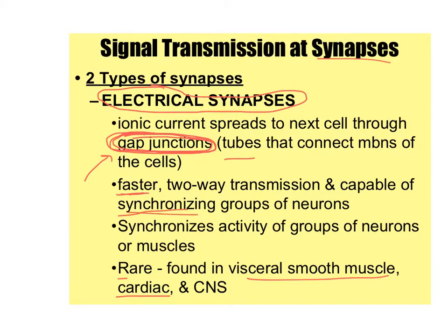It's very important that heart muscle contracts all at once, so you don't want any delay from a synapse. Gap junctions allow synchronization because they're much faster. Also, gap junctions or electrical synapses can actually have two-way transmission — the impulse can travel in two directions. With chemical synapses, it can only go one direction: from the presynaptic neuron to the postsynaptic neuron.